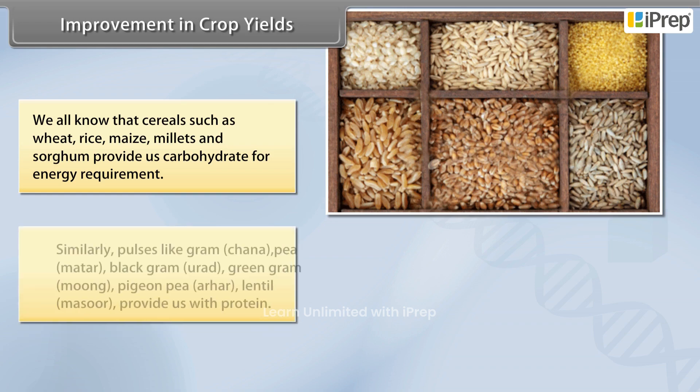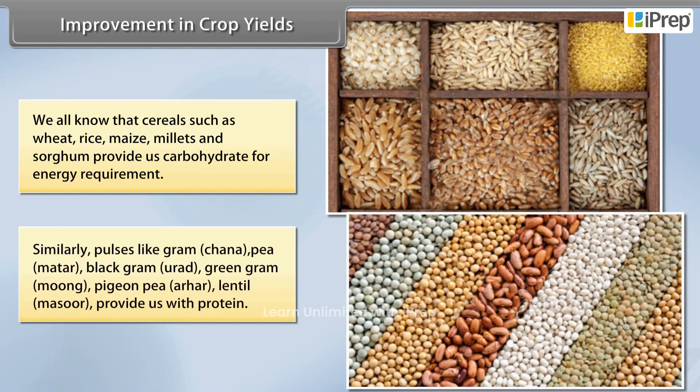Pulses like gram, chana, peas, mutter, black gram, green gram, moong, pigeon pea, arhar, and lentil masoor provide us with protein.